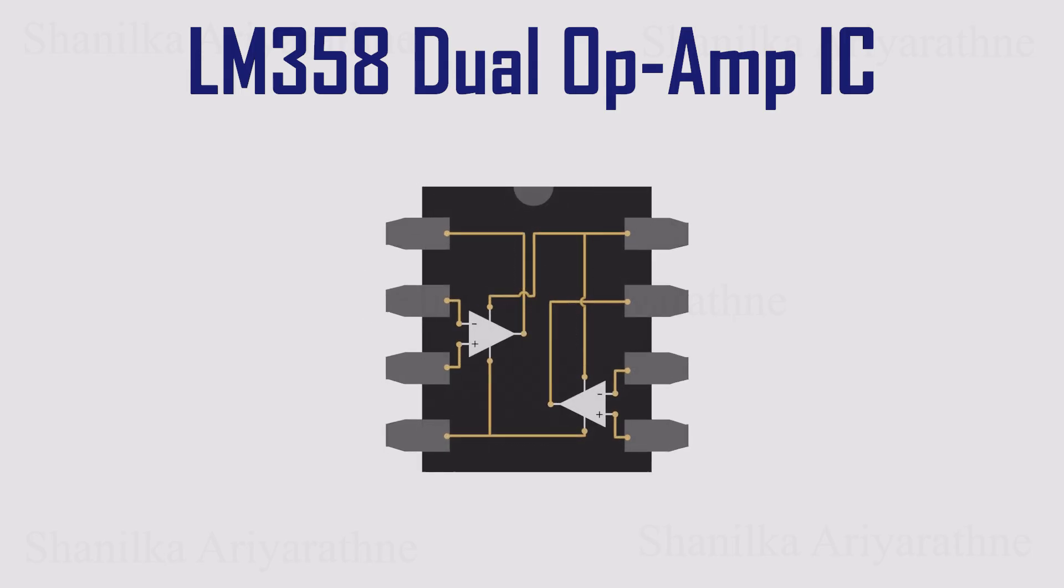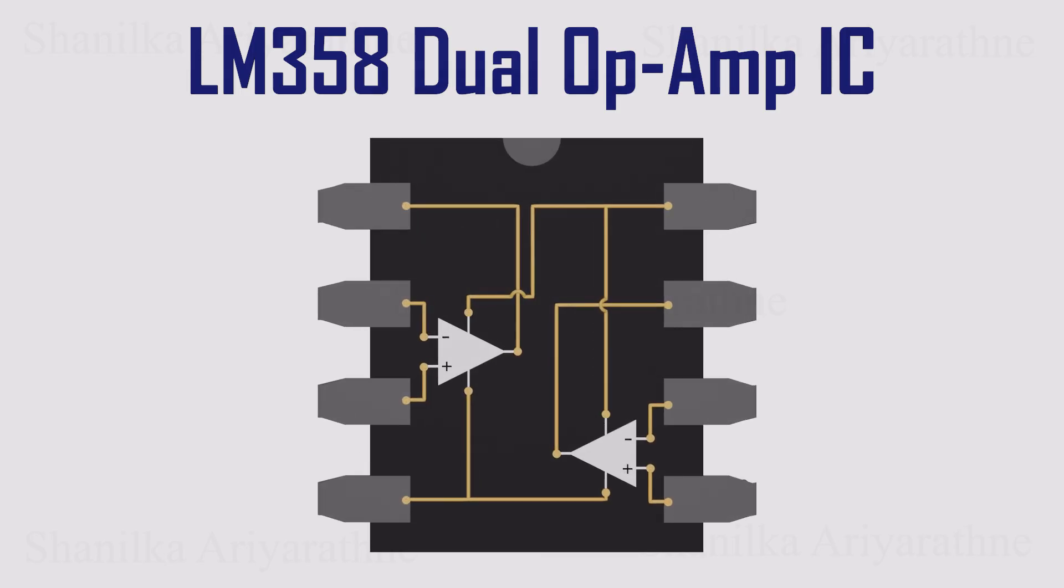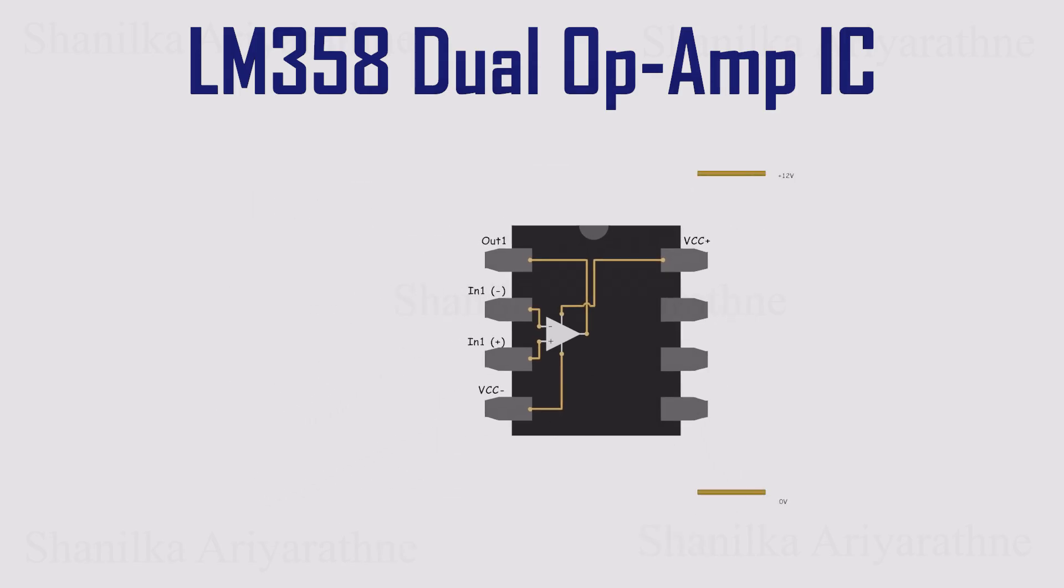Inside there are two separate op amps. Pins 4 and 8 connect to the power supply, VCC and ground. Pins 1, 2, and 3 belong to the first op amp, while pins 5, 6, and 7 belong to the second. We only need one op amp for this demo, so we'll leave the other unused. Powering it is simple, just connect pin 4 to ground, and pin 8 to the positive supply. The LM358 works with anything from 3 volts up to 20 volts.